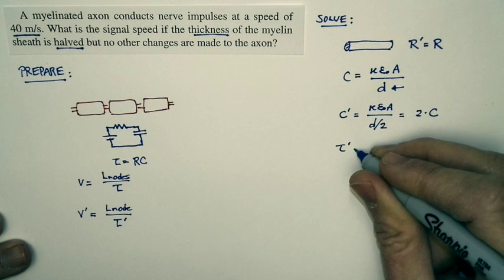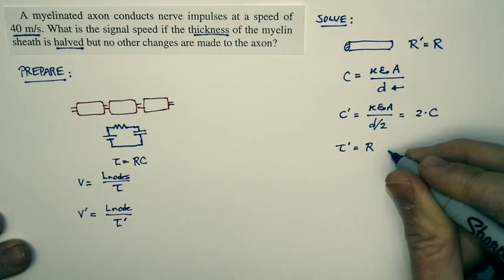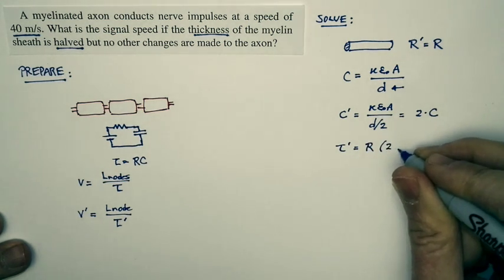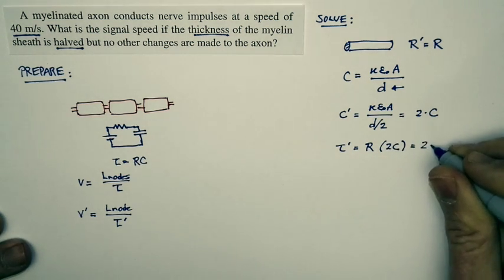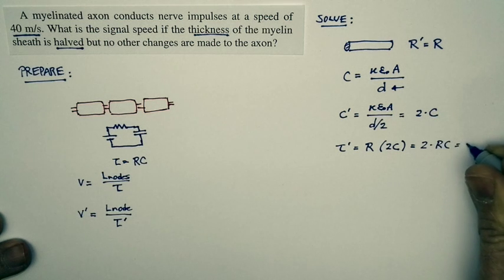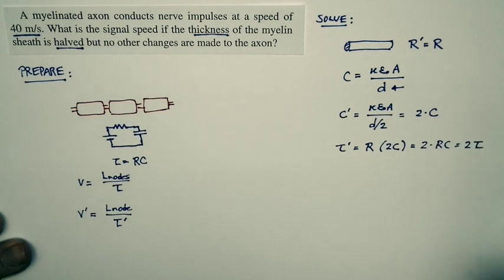So the new time constant is just equal to the same resistance, but twice the capacitance. And so it's equal to 2 times RC, 2 times the original time constant.